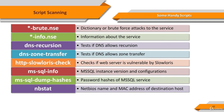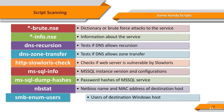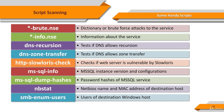By default, the nbstat script displays the name of the computer and the logged-in user. If verbosity is turned up, it displays all the names the system thinks it owns. SMB enum users attempts to enumerate the users on a remote Windows system with as much information as possible. The goal of this script is to discover all user accounts that exist on a remote system.